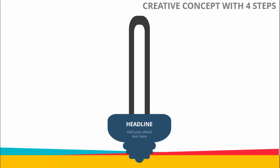In today's tutorial I'm going to show you how to create a creative concept with four steps infographics slide in PowerPoint. I have designed this bulb and you can add your headline and the detailed text. How this works is when I click, the first step will come, then second, third, fourth.